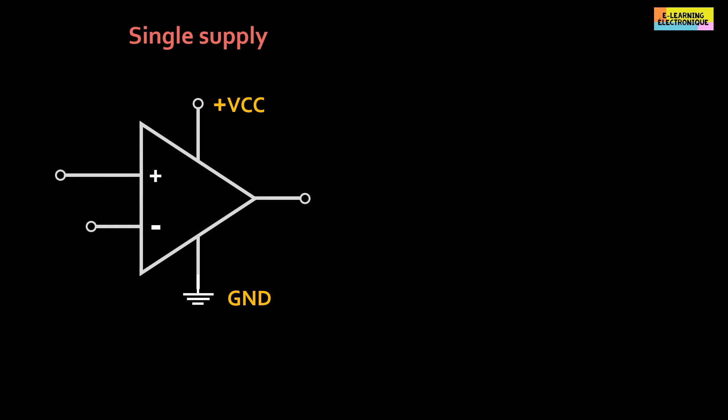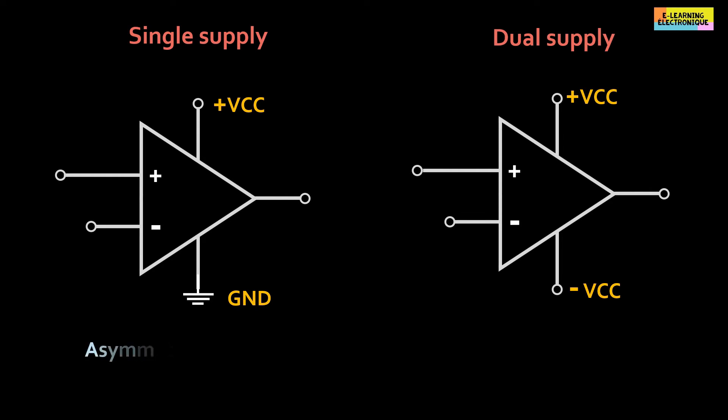When the op-amps is connected to ground it is said to have a single supply. On the other hand, when the voltage takes a negative value, minus VCC, the op-amps is said to be on dual supply. When the positive voltage is different from the negative voltage, we say that the power supply is asymmetrical. The power supply is said to be symmetrical when the value of minus VCC is identical to plus VCC but with a reversed polarity.